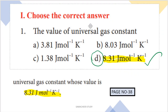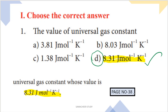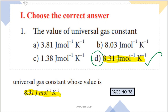First question: the value of universal gas constant. Students, you can memorize the value of universal gas constant — R = 8.314 J mol⁻¹ K⁻¹. So the 4th option, D, is the right option. This is the standard value.